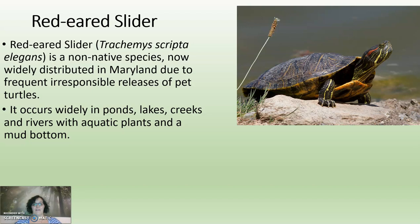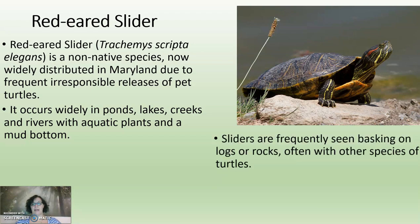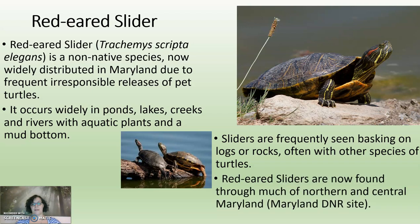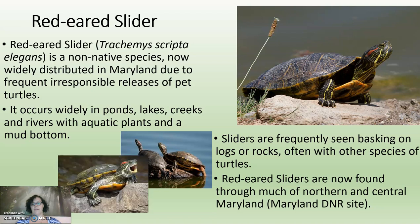The red-eared slider is usually found in ponds, lakes, creeks, and rivers with aquatic plants and a mud bottom. Sliders are frequently seen basking on rocks or logs, often with other species of turtles. Red-eared sliders are now found throughout much of northern and central Maryland.